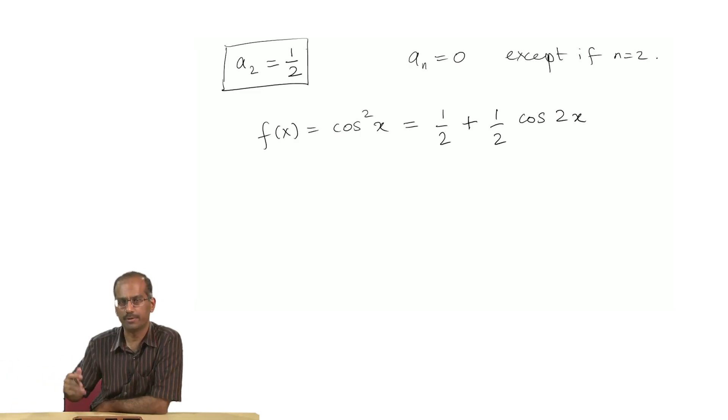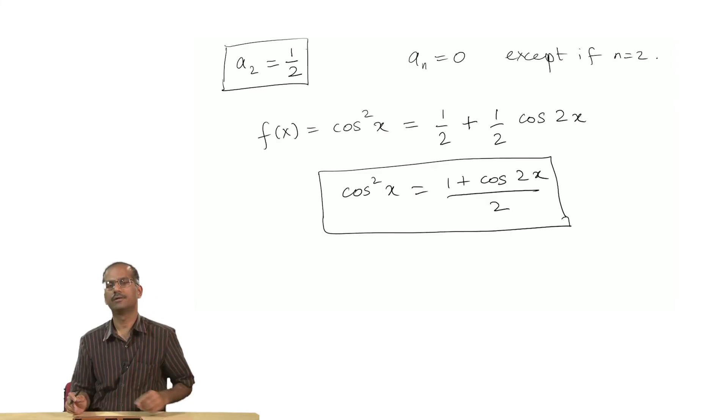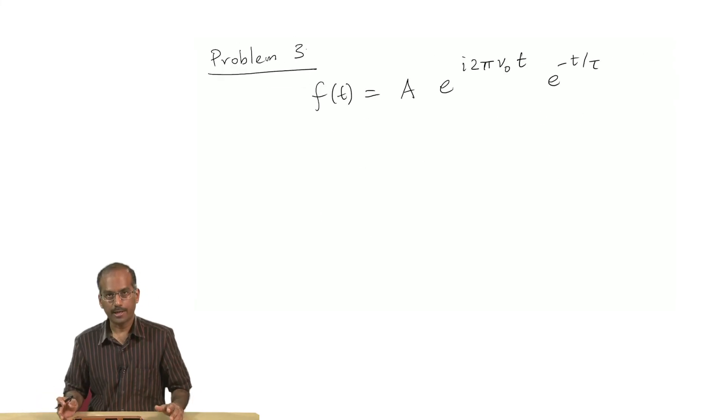We will have a situation where a₂ is equal to 1 by 2. The final result will be half plus half into cos 2x and all other a_n's will be 0 and b_n's are also 0. We have the result that cos²x is equal to (1 + cos 2x) by 2. It is not very surprising, this is simply one of the basic trigonometric identities.